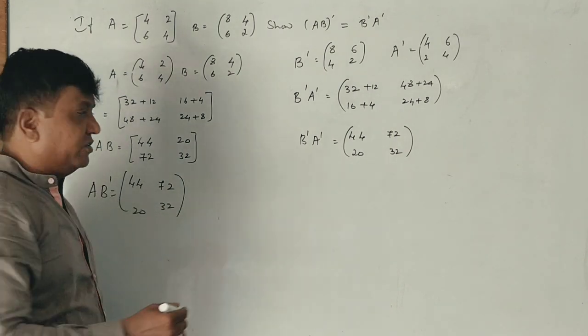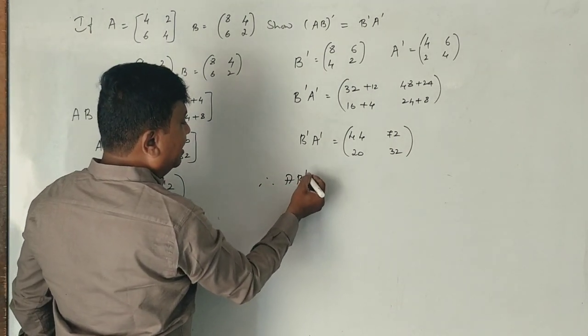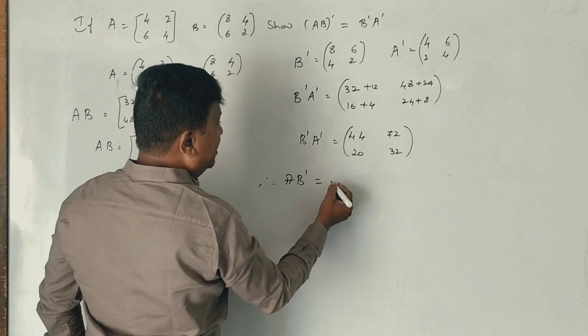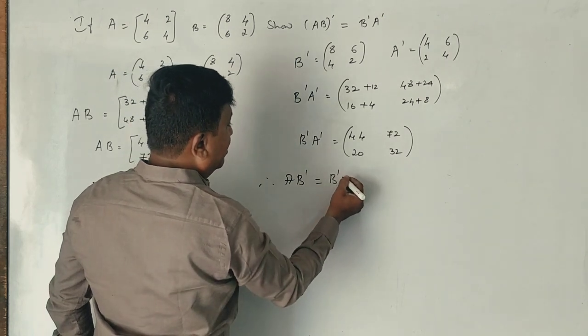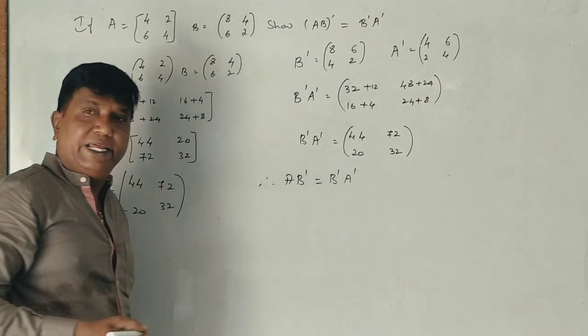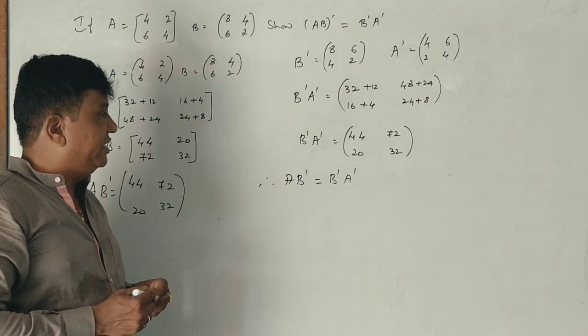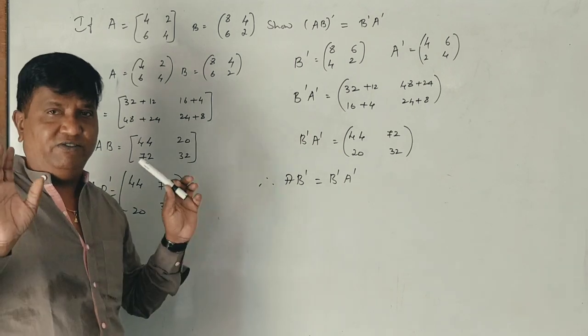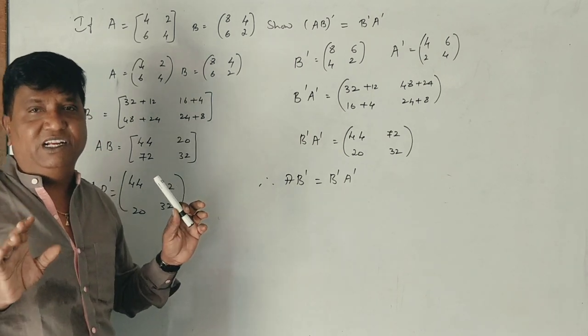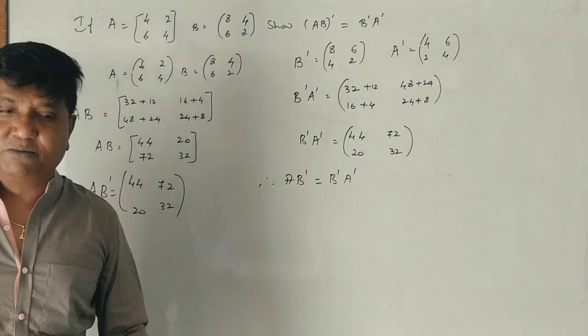32 plus 12 is 44, this is 72, this is 20, this is 32. So therefore, AB inverse equals B inverse into A inverse — that is, (AB)⁻¹ = B⁻¹A⁻¹. This is correct, and this is the 6-mark question answer.